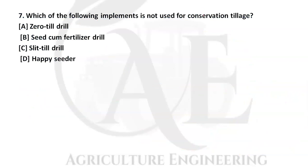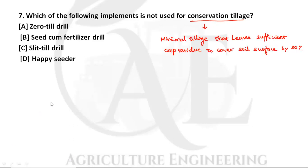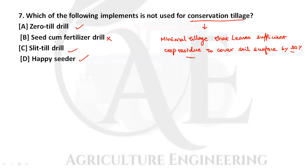Next question: which implement is not used for conservation tillage? Conservation tillage is a minimal tillage system that leaves sufficient crop residue to cover the soil surface by 30%. A zero-till drill and happy seeder are used; the seed drill is not used for conservation tillage. Option B is the correct answer.